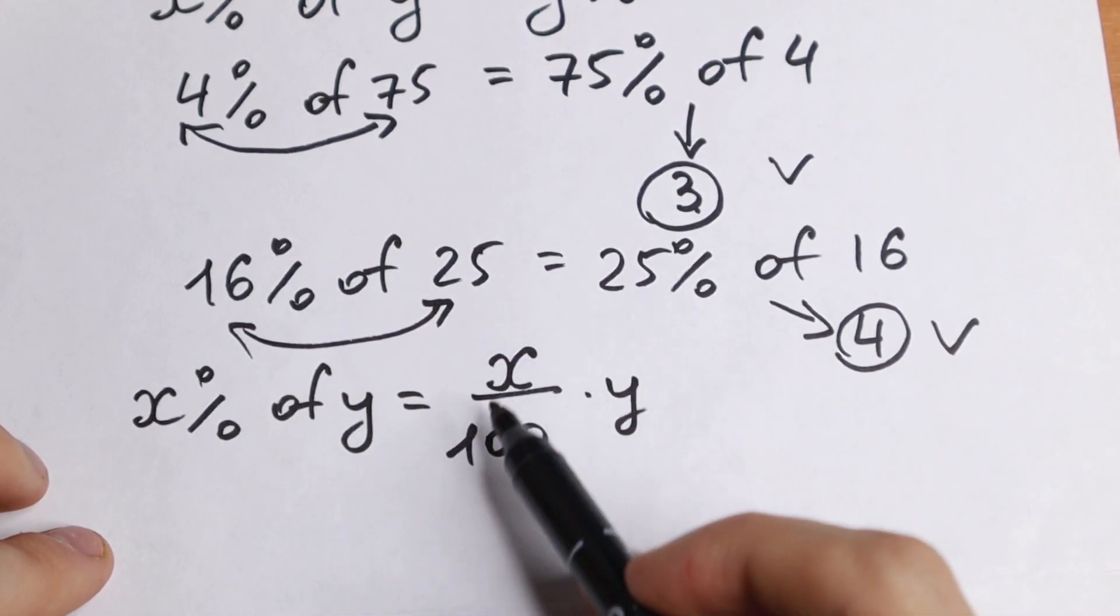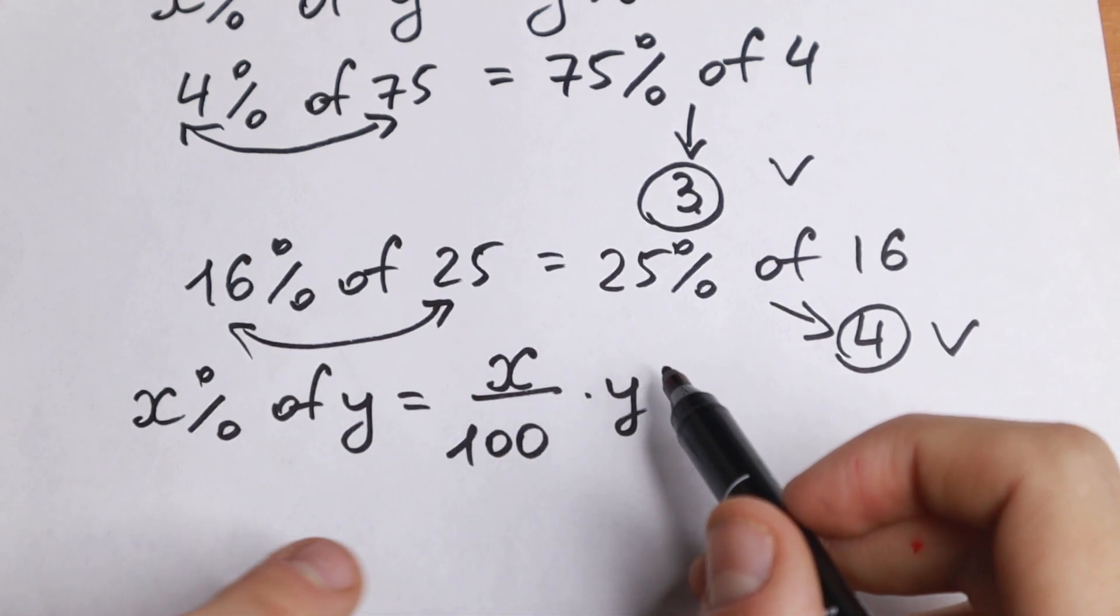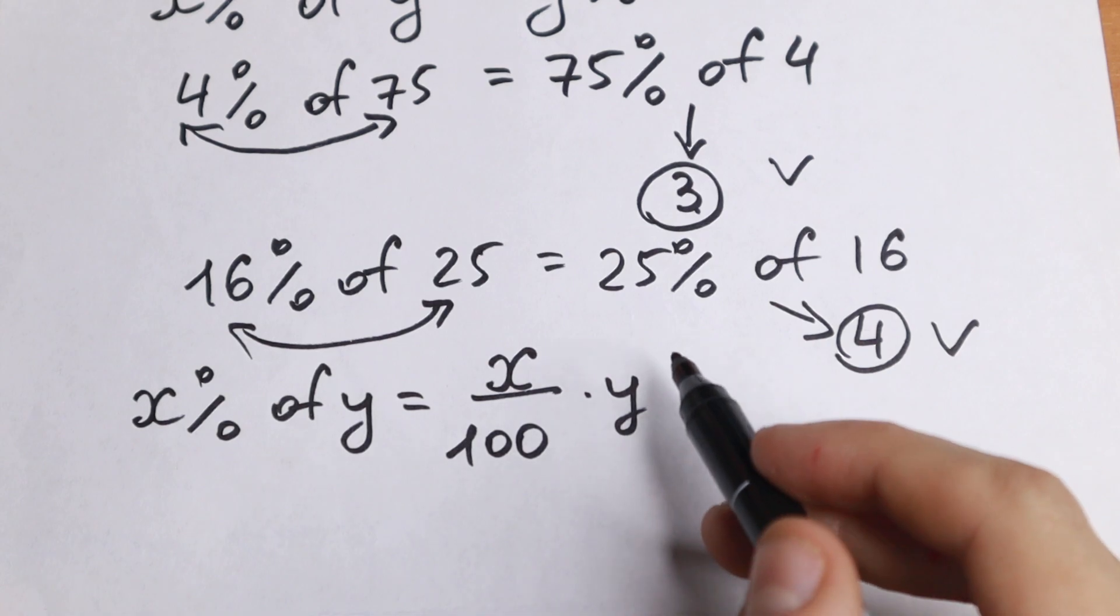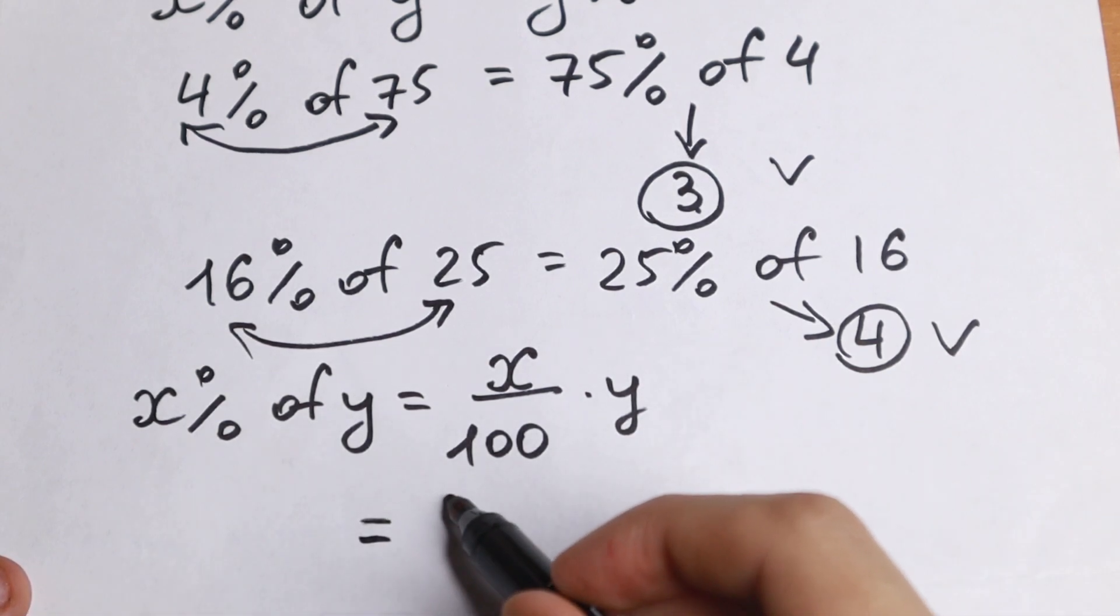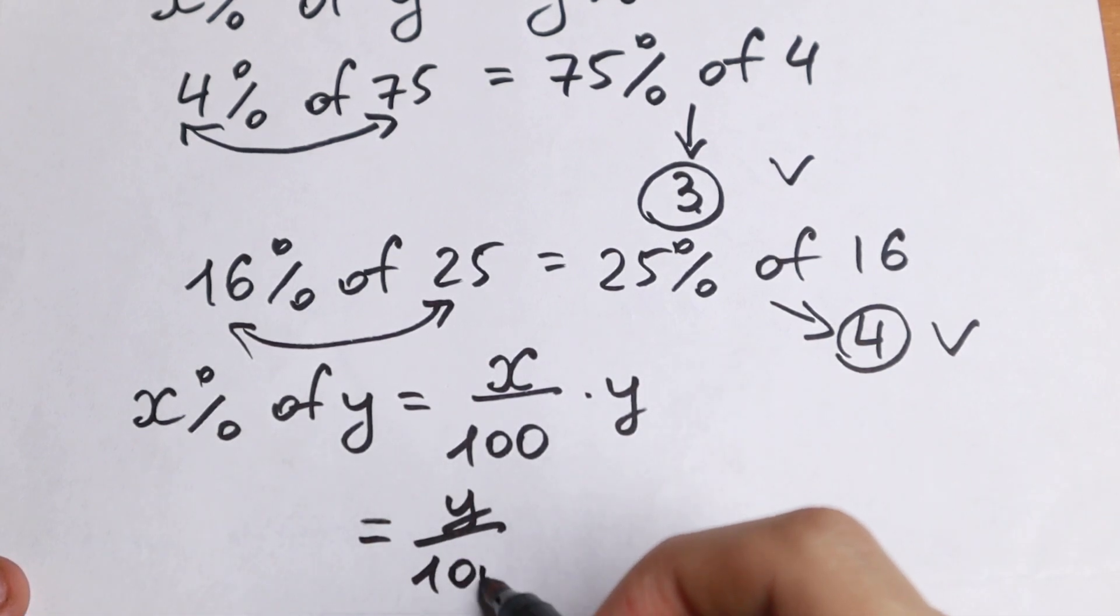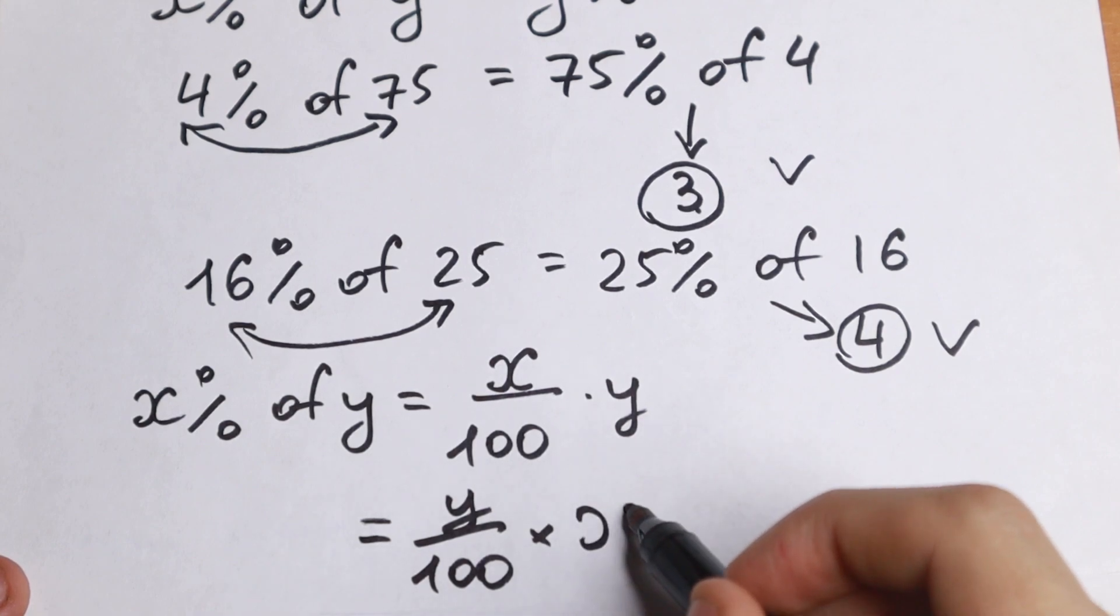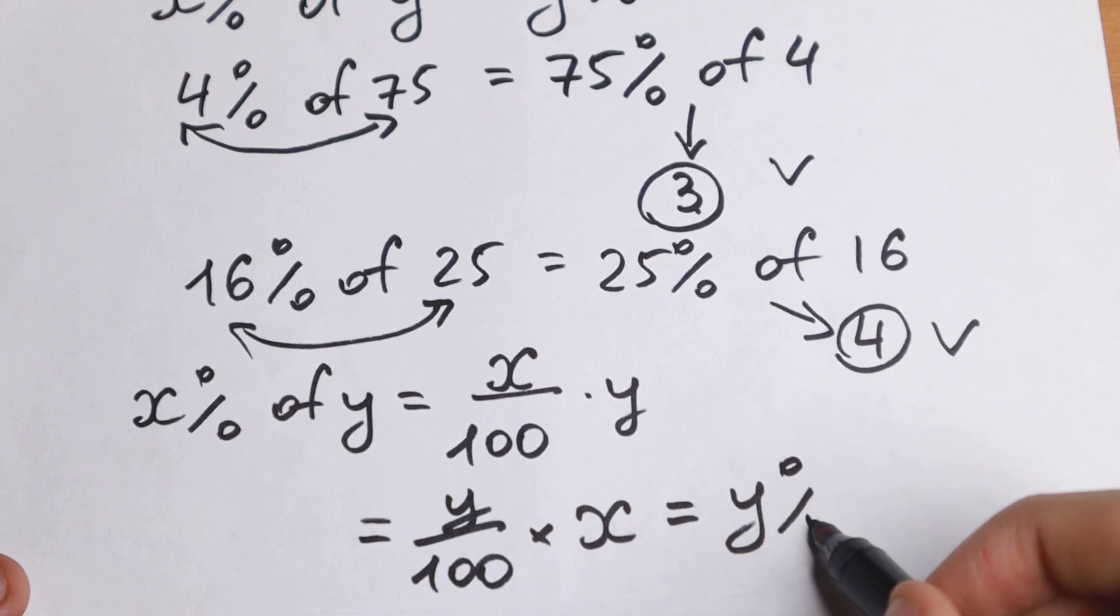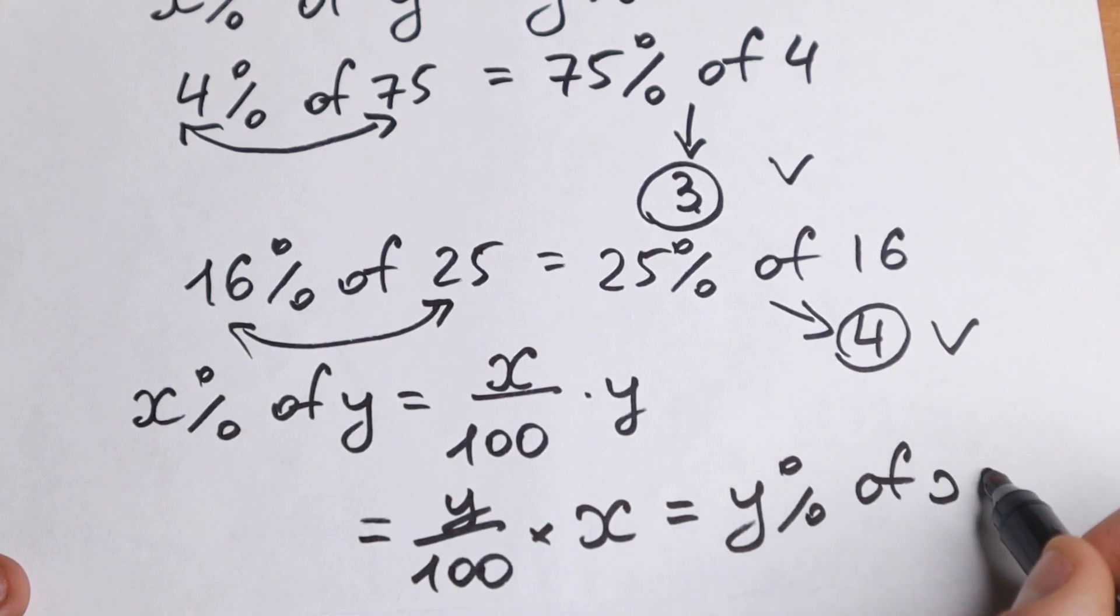And we all know that this product works because we can swap these two elements. Because this is a product, the order doesn't matter. We will have y over 100 times x, and it's not hard to see that this will be equal to y percent of x.